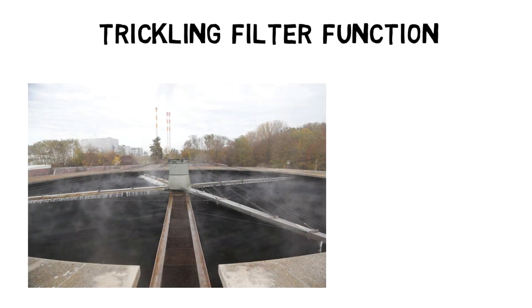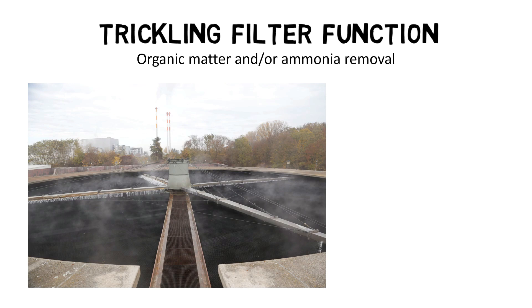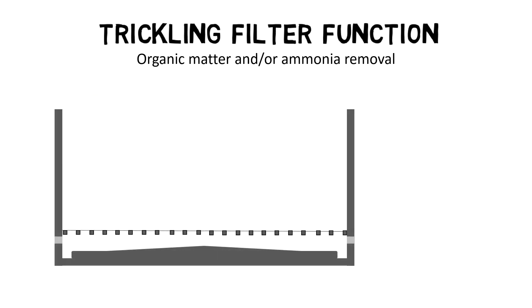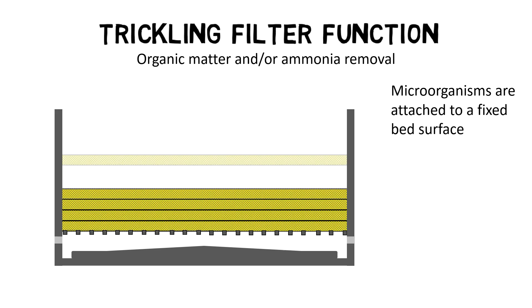Trickling filters are biological reactors within wastewater treatment plants, which are used to remove organic matter and/or ammonia from wastewater. Compared to the activated sludge process, the microorganisms are not suspended in the mixed liquor, but they are attached to a fixed bed surface.